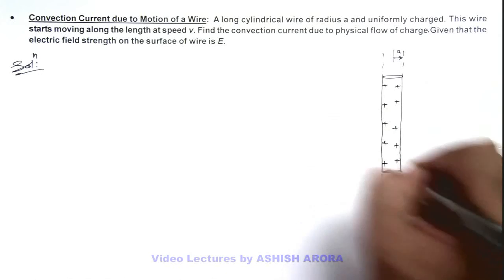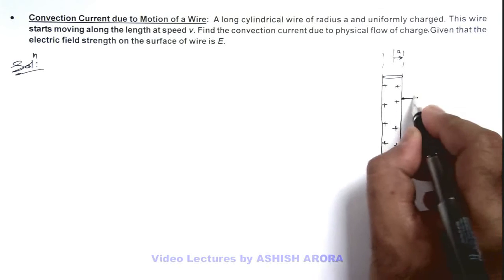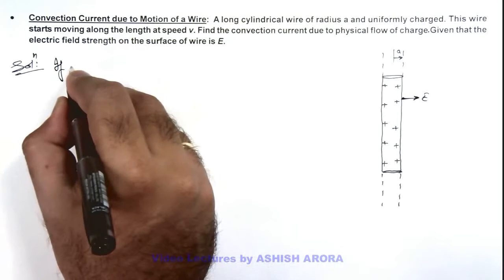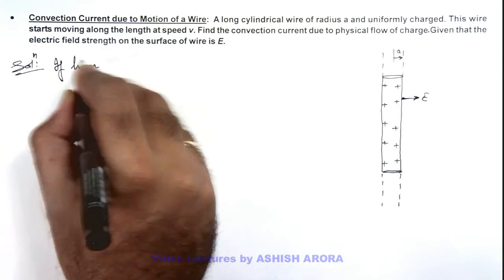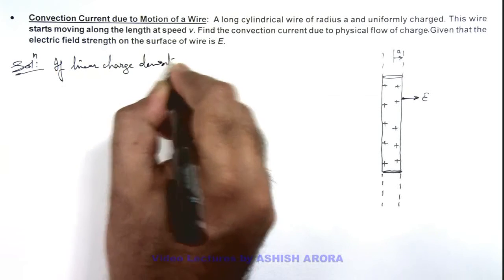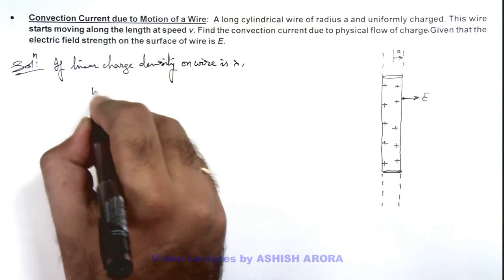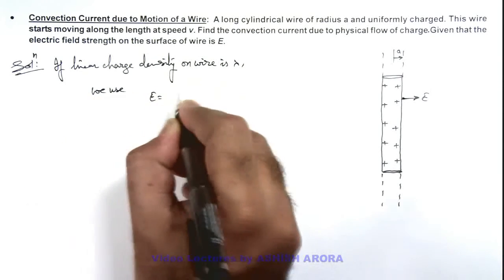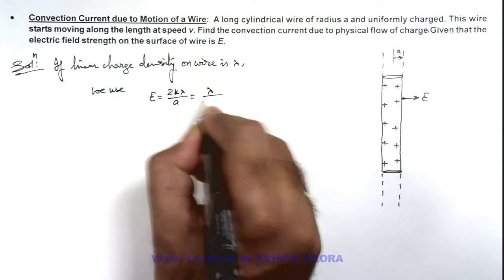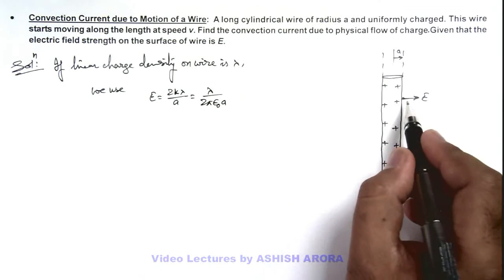In this situation, it is also given that on the surface of wire the electric field strength is E. If we consider linear charge density on wire is λ, we can use the value of electric field equal to 2kλ/a, or λ/(2πε₀a). If this is the electric field on the surface of wire.